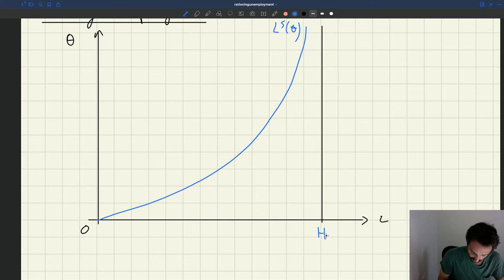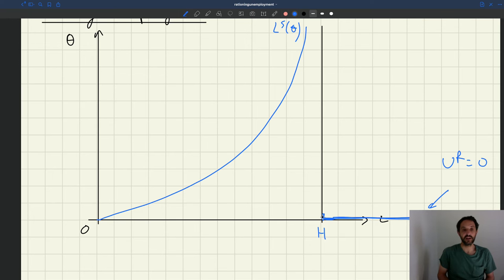So if your labor demand intersects your X axis somewhere here, here you would have no rationing unemployment, right? So that would be very interesting. So let's focus on the situation in which rationing unemployment is positive. So that requires productivity to be low enough, for instance, or wages to be high enough.